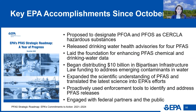In the PFAS roadmap, EPA committed to issuing a public report on its PFAS progress each year. In November 2022, EPA released its first one-year progress report. Since the roadmap's release, EPA has taken the following actions: proposed to designate two PFAS as hazardous substances under CERCLA or Superfund; released drinking water health advisories for four PFAS; laid the foundation for enhancing data on PFAS; begun distributing $10 billion in funding to address emerging contaminants under the bipartisan infrastructure law; expanded scientific understanding of PFAS; proactively used enforcement tools to better identify and address PFAS releases; and released a set of PFAS analytic tools to publicly share data on PFAS in communities.